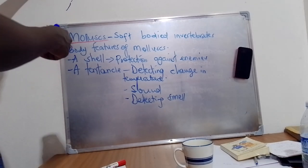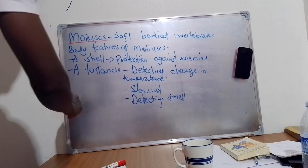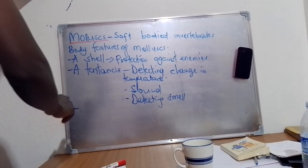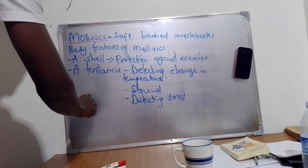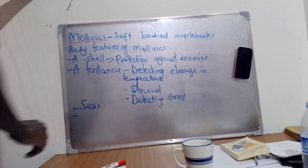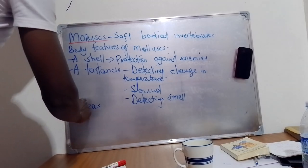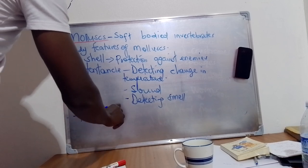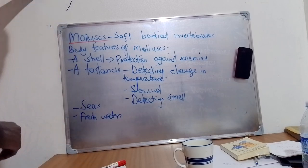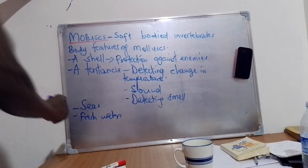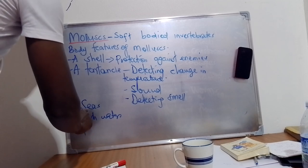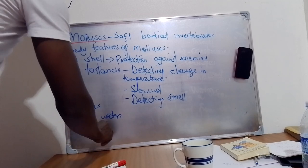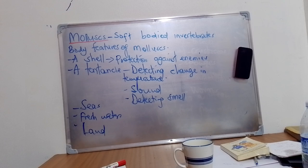Where do mollusks commonly live? Mollusks commonly live in seas and fresh waters. Some also live on land.